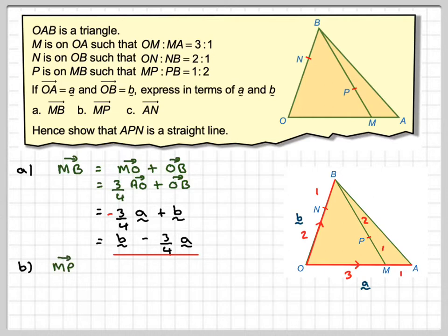B, vector M to P. Well, we now have the vector MB, and so it's going to be one third of vector MB. So all we need to do is take one third of my previous answer. That's going to give me one third of b. Now the threes will cancel out, so it'll be one quarter of a.